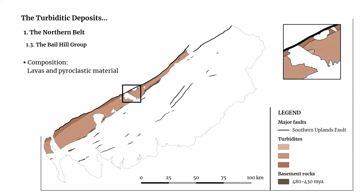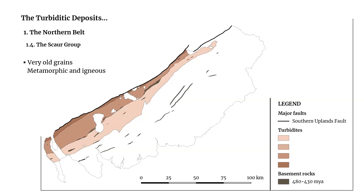The following group of rocks is markedly different from the rest. Not only does it occupy a tiny area, but it's composed not of greywacke but of lavas and pyroclastic material, thought to be sourced from an ancient seamount volcano. The fourth and youngest group of turbidites from the northern belt is very similar to the second group, in that the greywacke sandstones also contain very old grains resulting from erosion of the ancient Laurentian basement.